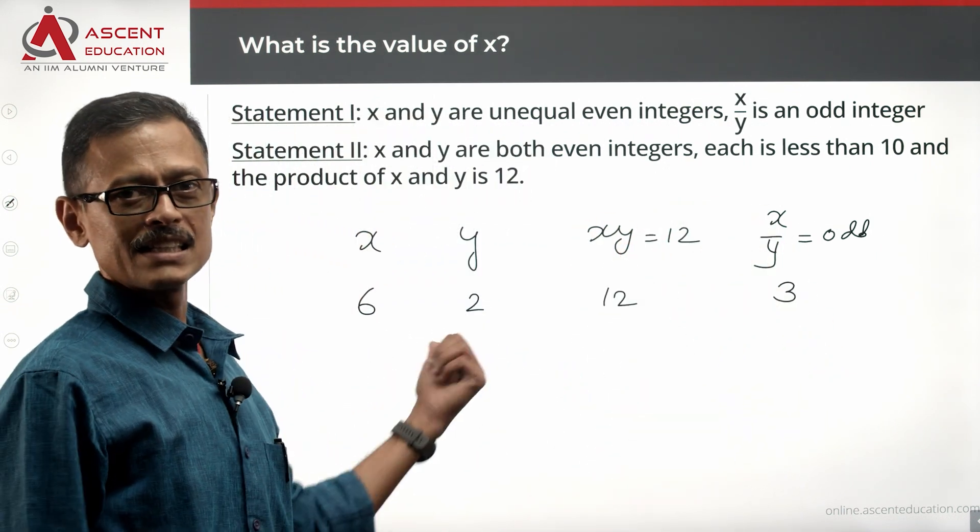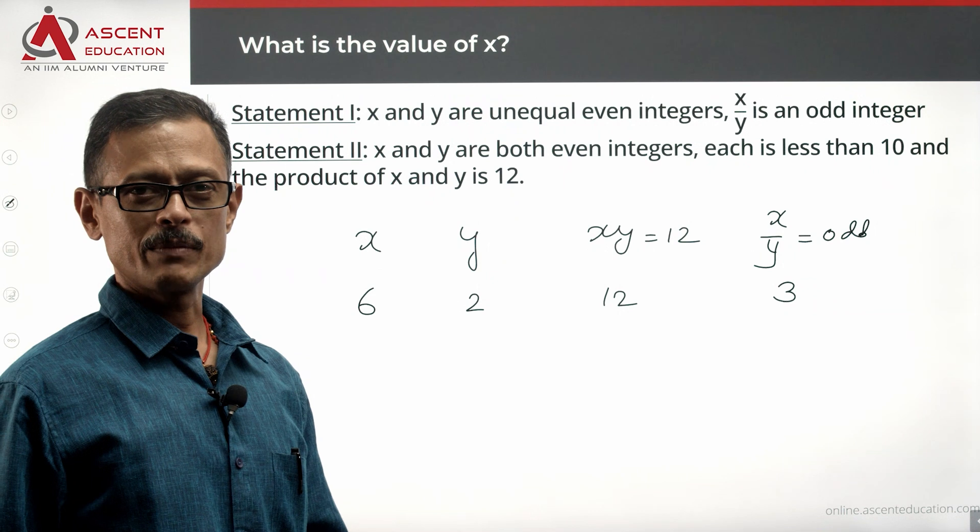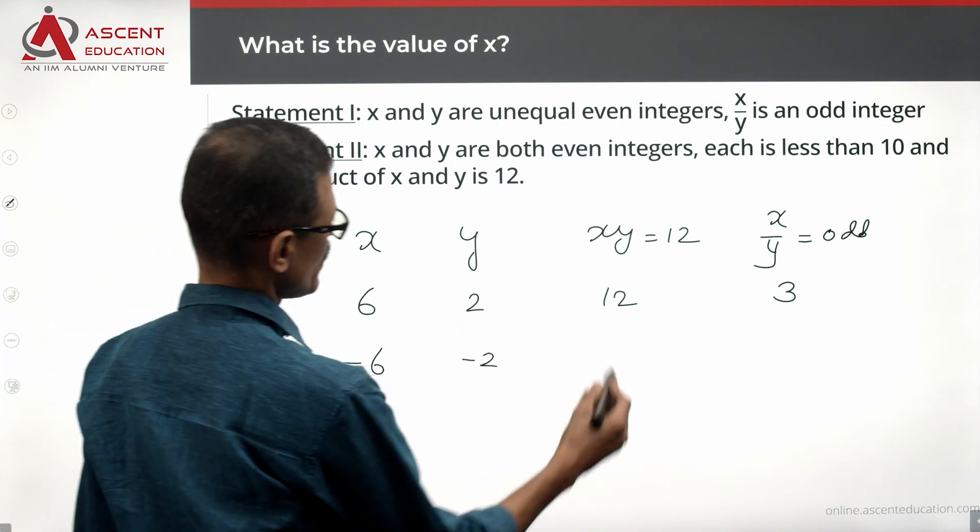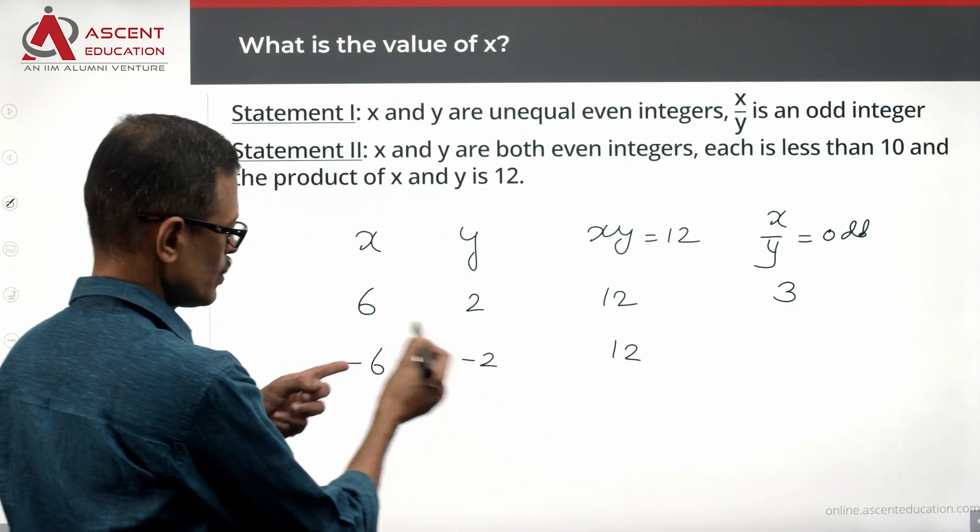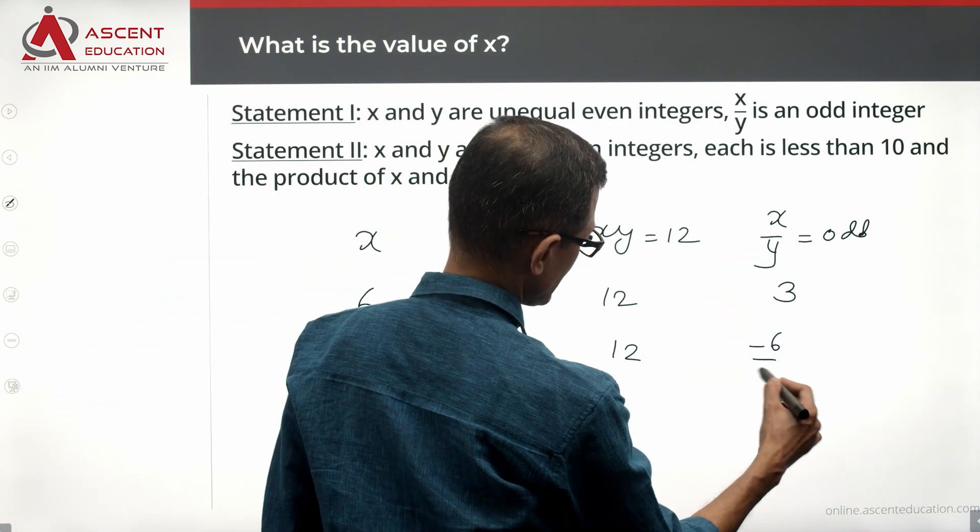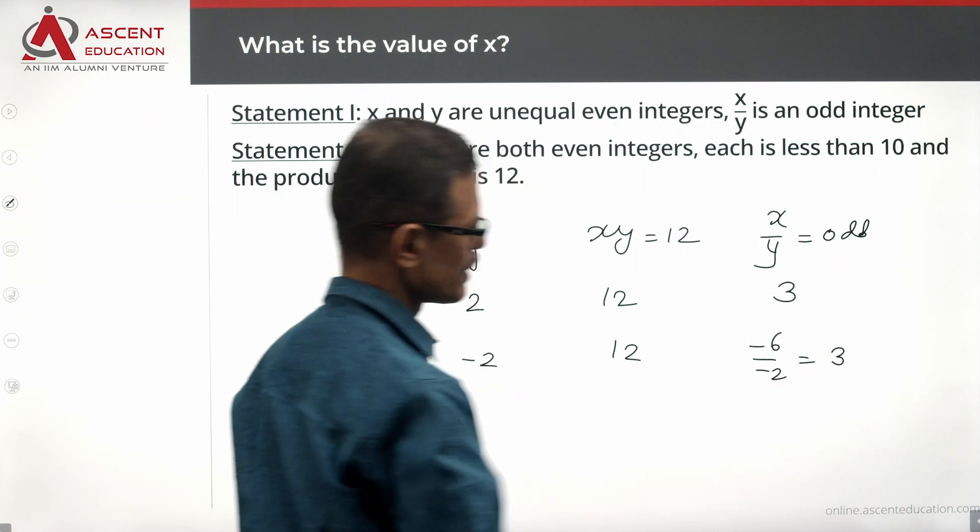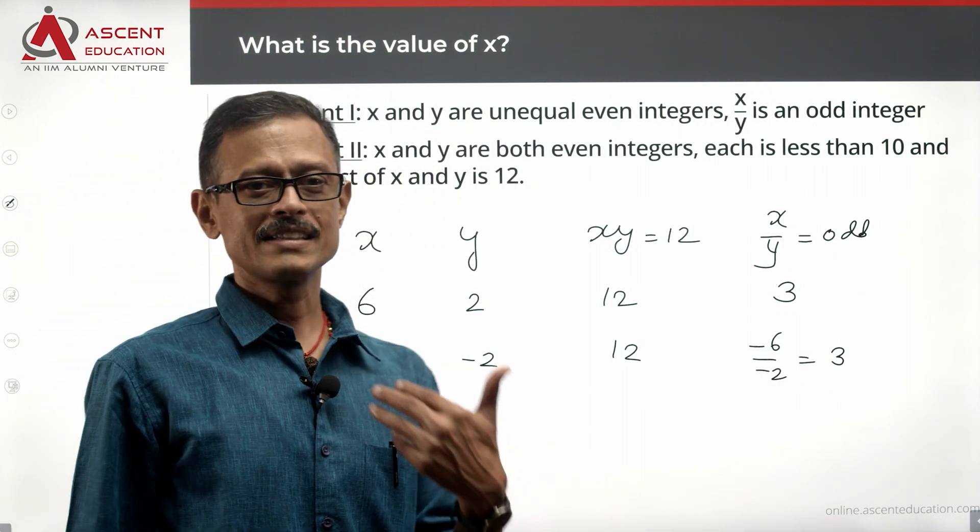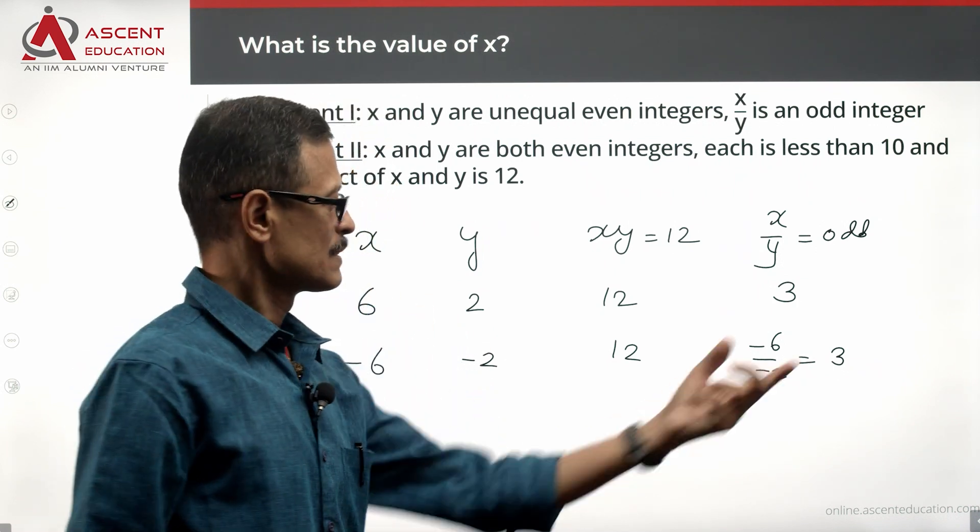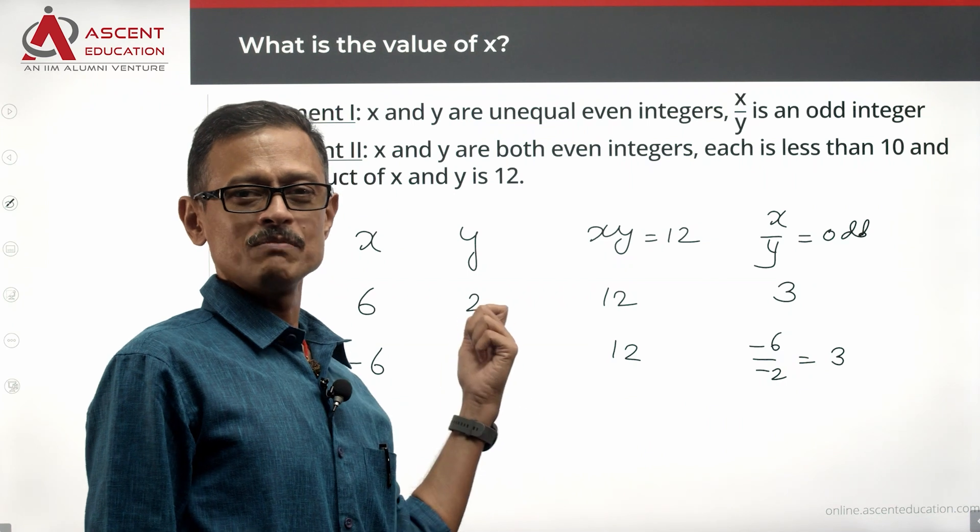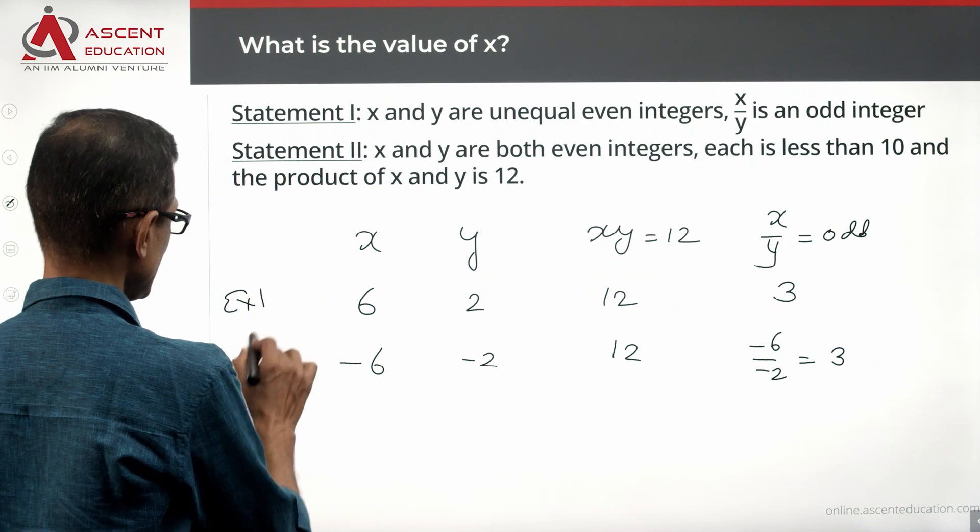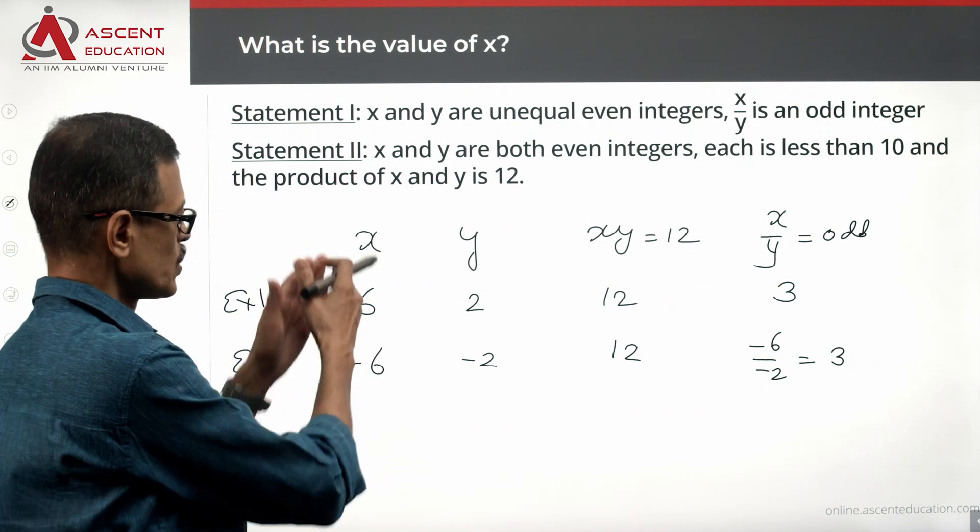Is there any other number that would satisfy all the conditions? Let's take a look at this. Minus 6, minus 2. Is the product 12? Yes. Are both these numbers less than 10? Negative numbers are obviously less than 10. Now X by Y, minus 6 by minus 2, which is again an odd number, right? So this number set also is satisfying all the conditions. X and Y should be unequal, X by Y should be an odd number, X and Y both should be less than 10, and X times Y is equal to 12. Conditions of both example 1 and example 2 are satisfying. Do we see a unique value for X? 6 or minus 6?